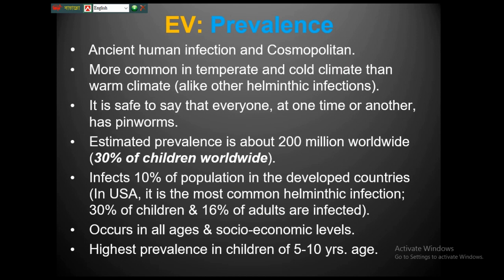Enterobiasis is one of the ancient human infections and is cosmopolitan in nature. Unlike other helminthic infections that are more common in warm tropical and subtropical climates, enterobiasis is more common in temperate and cold climates. It is one of the highly prevalent helminthic infections — worldwide, 200 million people are infected, and among them 30 percent of children in the USA.